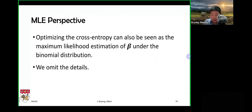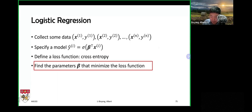There is also a maximum likelihood perspective: this can be seen as maximum likelihood estimation of the model parameter beta under the binomial distribution — but we'll omit details due to time constraints. The last part is finding the model parameter beta that minimizes the loss function.